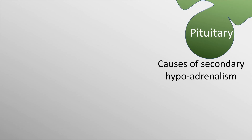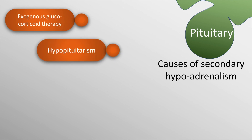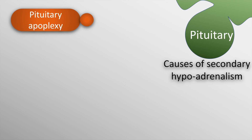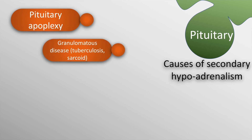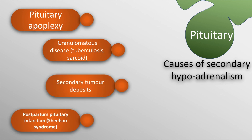Secondary hypoadrenalism or secondary adrenal insufficiency is due to a disease in the pituitary and this must be remembered. The causes are exogenous glucocorticoid therapy, hypopituitarism, removal of pituitary adenomas and pituitary tumors as well as surgery in the pituitary area. There could also be pituitary apoplexy, granulomatous disorders of the pituitary such as tuberculosis and sarcoidosis, secondary tumor deposits, and postpartum pituitary infarction which is also called Sheehan syndrome.